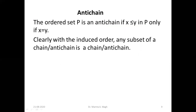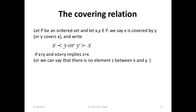Next is the anti-chain. An ordered set P is an anti-chain if x ≤ y in P only if x equals y. Clearly, with the induced order, any subset of a chain or anti-chain is a chain or anti-chain. In an anti-chain, no element is related to any other distinct element — if x and y are two elements, they are related only if x equals y. So no two different elements are comparable.